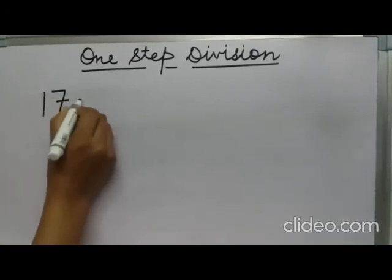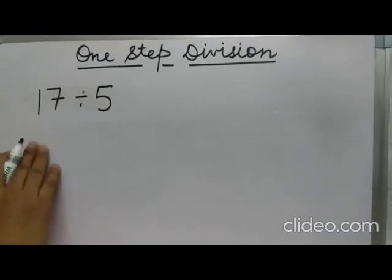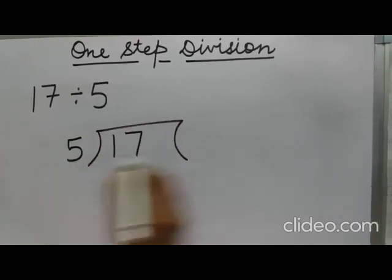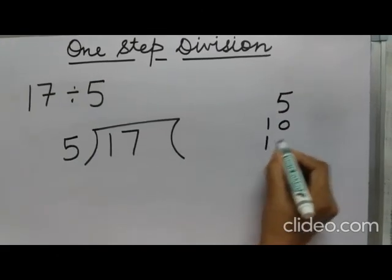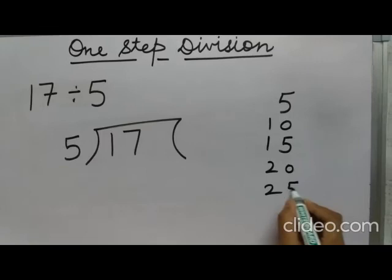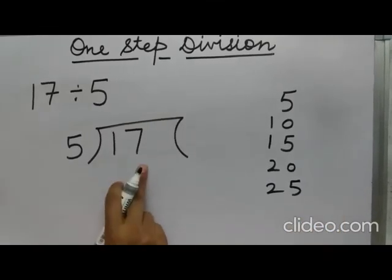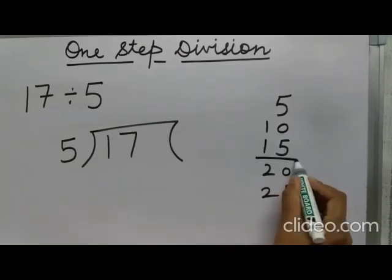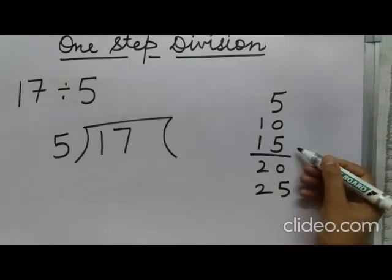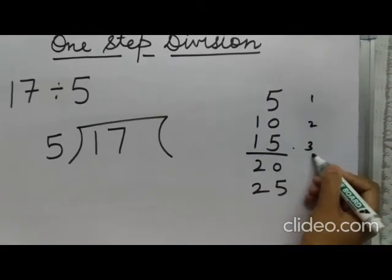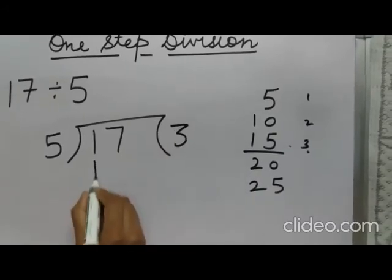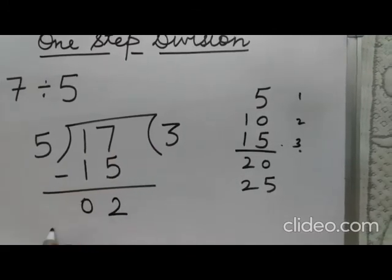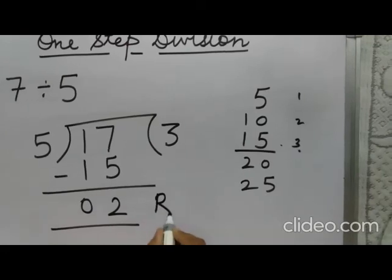Let us do one more example: 17 divided by 5. We read the table of 5: 5 ones are 5, 5 twos are 10, 5 threes are 15, 5 fours are 20, 5 fives are 25. Since 17 is not in the table, we look for the largest number less than 17, which is 15, at the 3rd place. So 5 threes are 15. We subtract 15 from 17 and get 2. The quotient is 3 and the remainder is 2. This is one-step division — just read the table and find the right place.